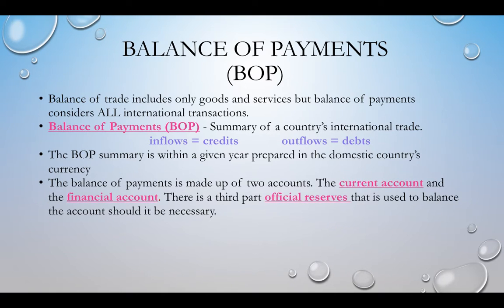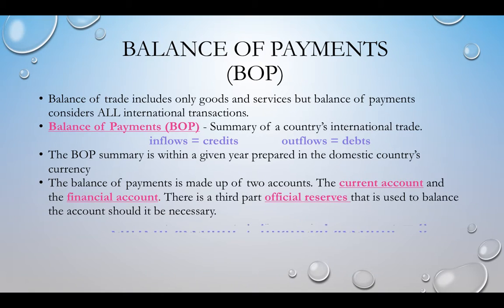There are two accounts we talk about: the current account and the financial account. The financial account was also called the capital account — if you see that term, understand it refers to the financial account. There's also a third part, official reserves, used if there's a discrepancy, because the balance of payments must always equal zero. Money going out must equal money coming in.